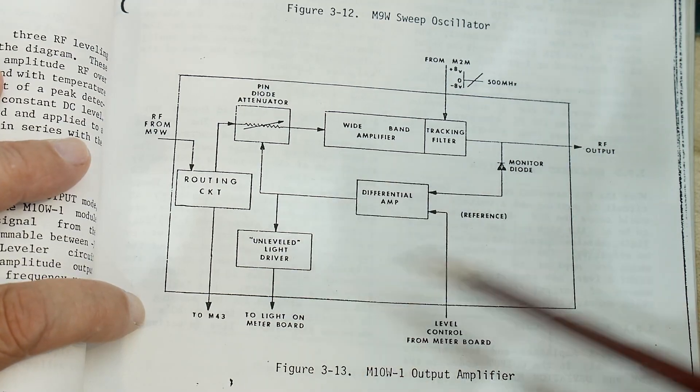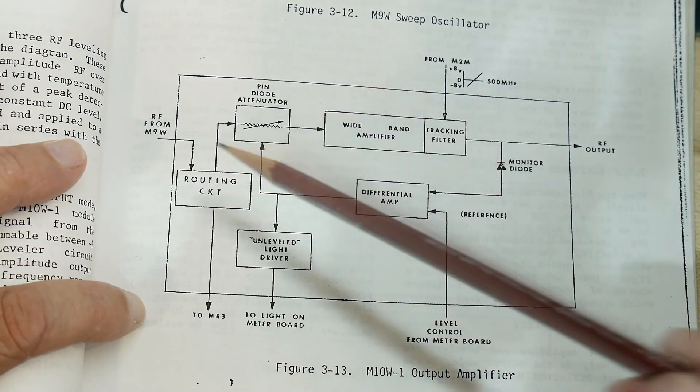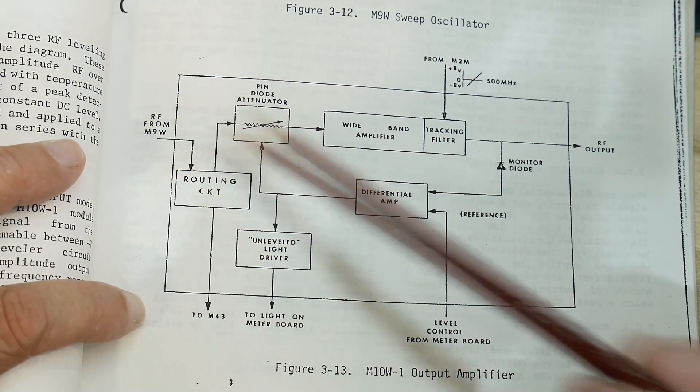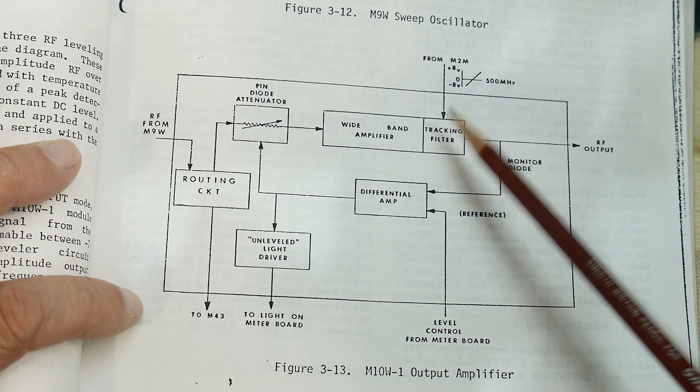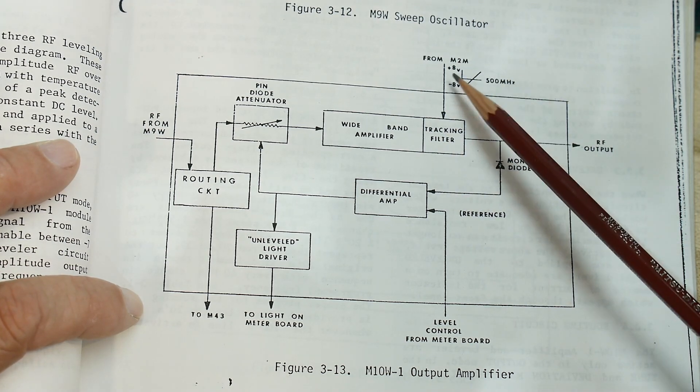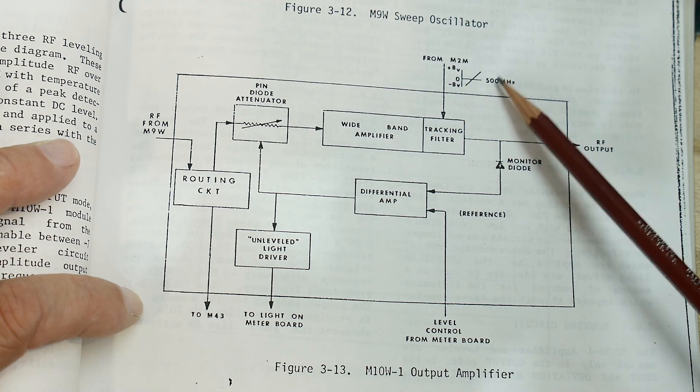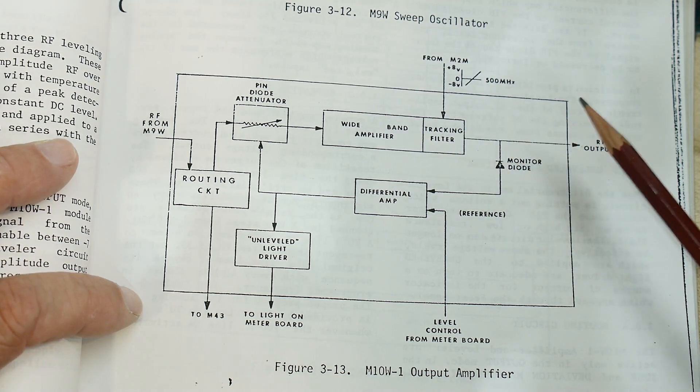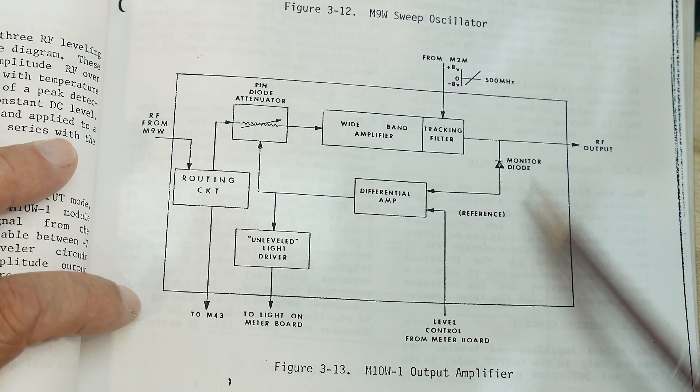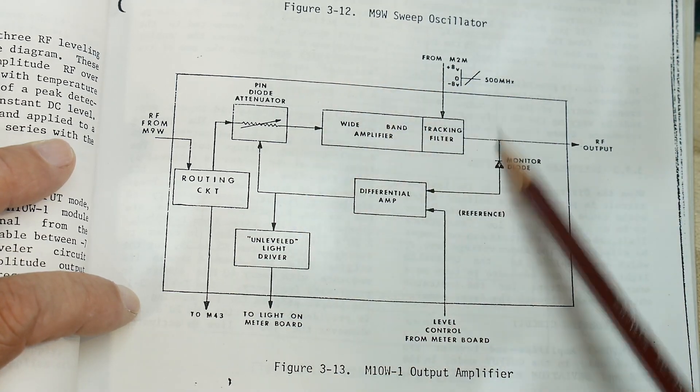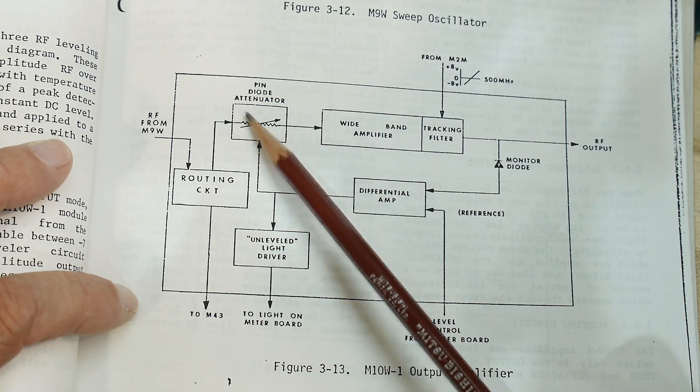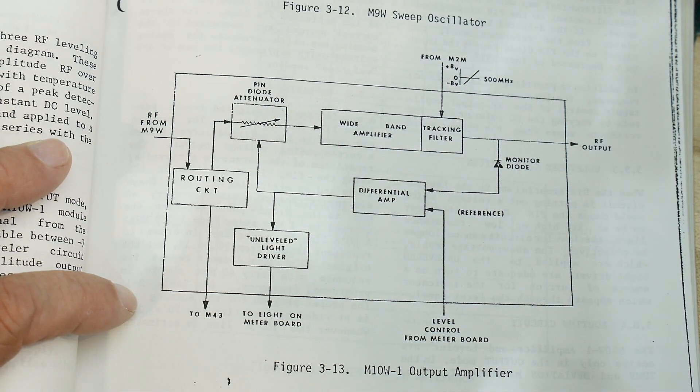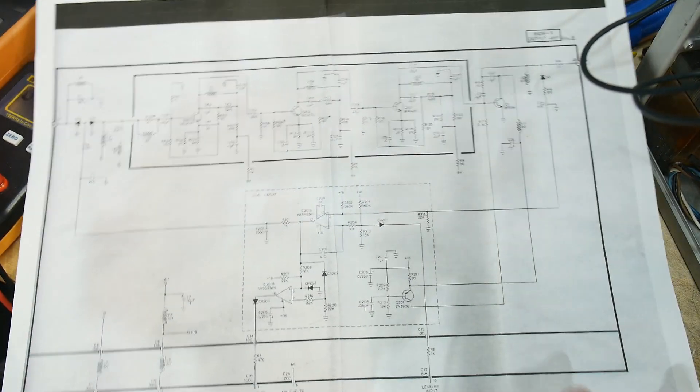All right, I found it. So this is the block diagram of the filter, of the output amplifier. So the voltage signal comes in. It goes through the pin attenuator. It goes into the wideband amplifier. That's the three transistors. Then it goes into a tracking filter. It was the tracking filter that sparked my interest. Minus eight volts to plus eight volts changes from between zero megahertz and 500 megahertz. So this is a voltage-controlled low-pass filter. And then there's a monitor diode in the differential amplifier. So this is what's supposed to be in there. This pin attenuator going into the amplifier and the tracking filter going out of the amplifier. Let's see if we can't find that on this new version of the schematic.